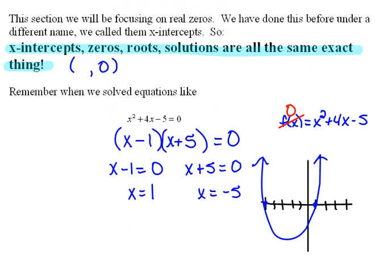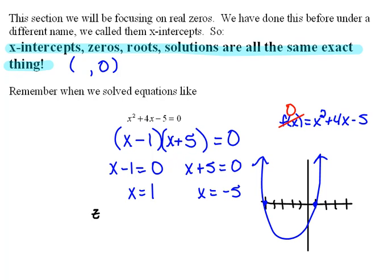Back on the first one that we did, here we had zeros, we had two of them. We had a zero at 1, and we had a zero at negative 5.